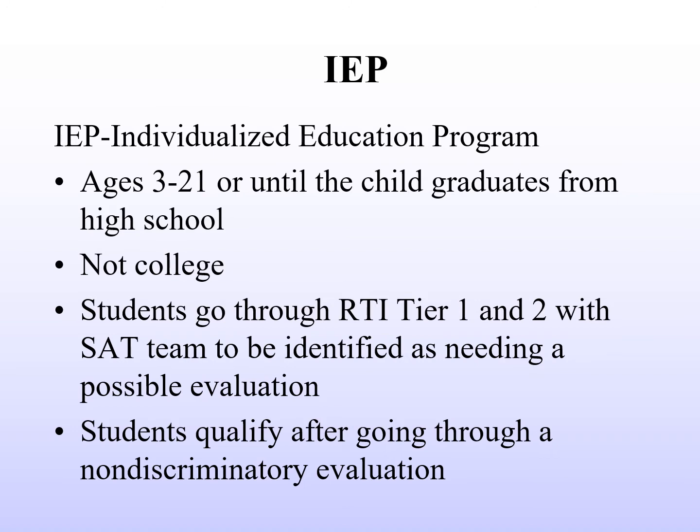IEPs are created after students go through the RTI — Response to Intervention Tier 1 and Tier 2 — with the SAT team, and then they're identified as needing a possible evaluation. After students qualify through that evaluation process, the next step is to create an IEP.